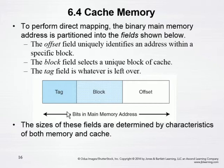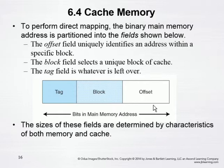The tag, which can be used for a bunch of different things depending on how you want to use it — and we'll see some examples of that. Then the block is which block of cache that block from the memory is going into. And then the offset tells which level within that block the specific data item is.